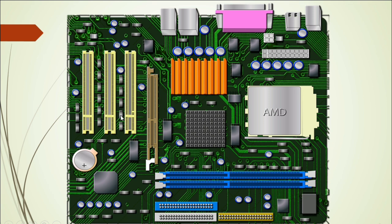These are the PCI connectors. In the motherboard we always find more than one PCI slot — here we have three slots. You can use the PCI slots to connect, for example, a sound card or a network card. For the AGP slot you can connect an additional external graphic card.